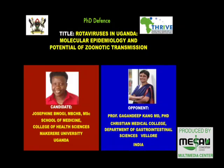Younger animals are protected for the first two months of life. The possible explanation could be that they are getting protection because the younger animals are still suckling, so they are getting protection from the breast milk — what's called colostrum, or milk.